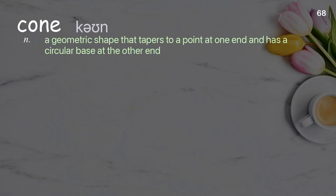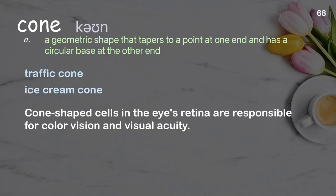Cone. A geometric shape that tapers to a point at one end and has a circular base at the other end. Examples: traffic cone, ice cream cone. Cone-shaped cells in the eye's retina are responsible for color vision and visual acuity.